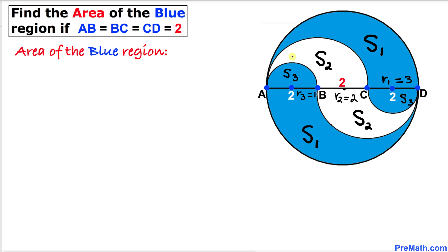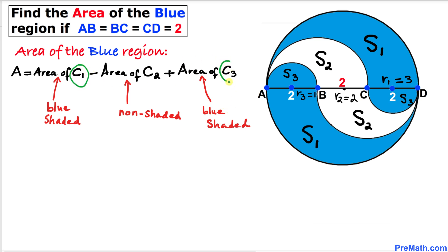Let's calculate the area of this blue shaded region. This area equals the area of circle C1 minus the area of circle C2 plus the area of circle C3. C1 and C3 are blue shaded circles, whereas C2 is non-shaded.